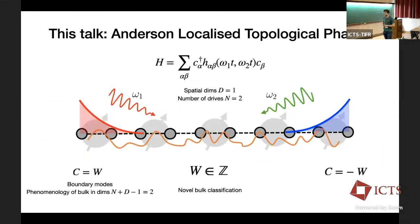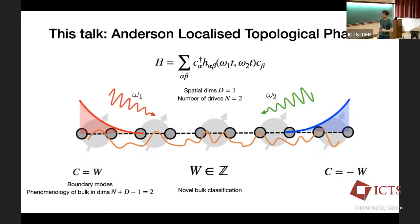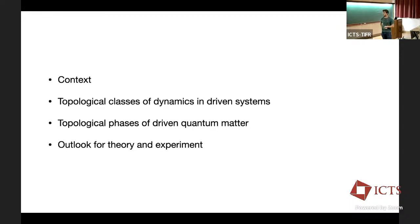To unpack what this means: I'm going to show how, if you take a system of free fermions with d spatial dimensions and n independent drives, you can realize a new phase of topological matter. It has a novel bulk classification, but its boundary modes have the phenomenology of bulk classifications in n+d−1 dimensions. In the specific example of one spatial dimension and two drives, n+d−1 equals two, so the boundary modes have the phenomenology of a quantum Hall effect.